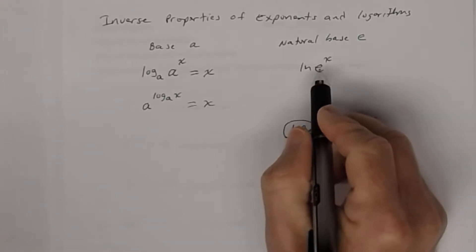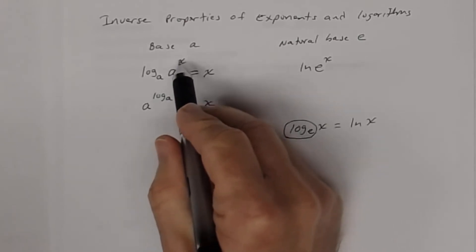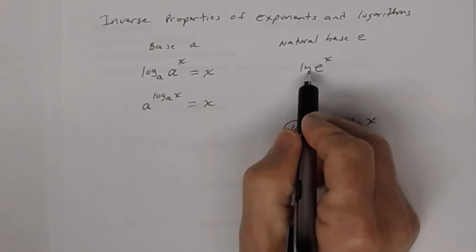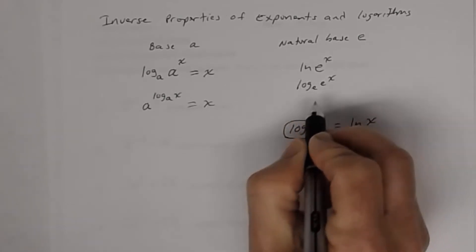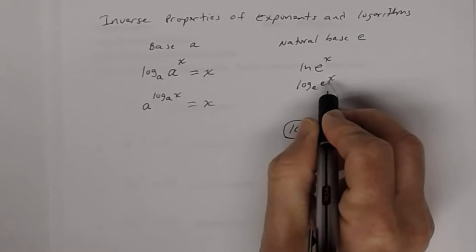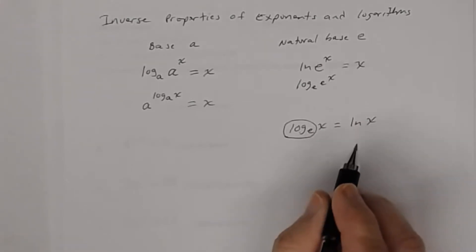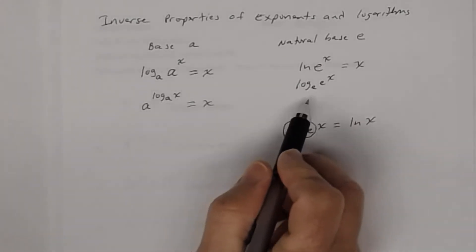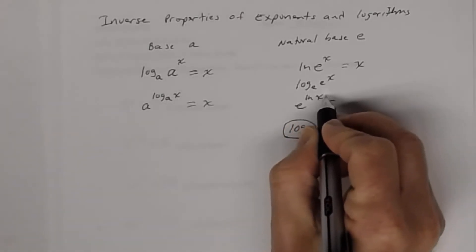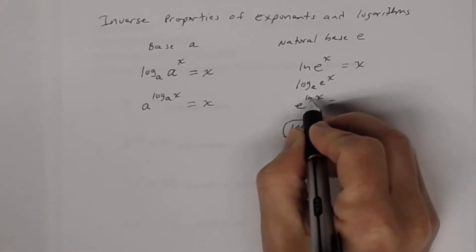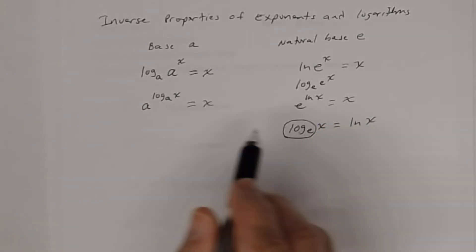Notice that if the base is the same, this is technically log base e of e^x, and since those bases are the same it's just the exponent. So the natural log of e^x equals x. Similarly, e raised to the natural log of x equals just the argument x, because the natural logarithm already has base e.